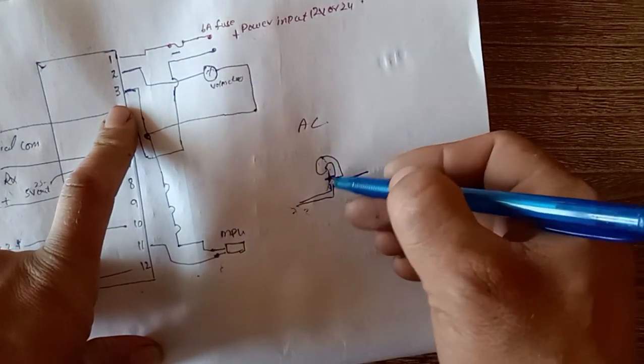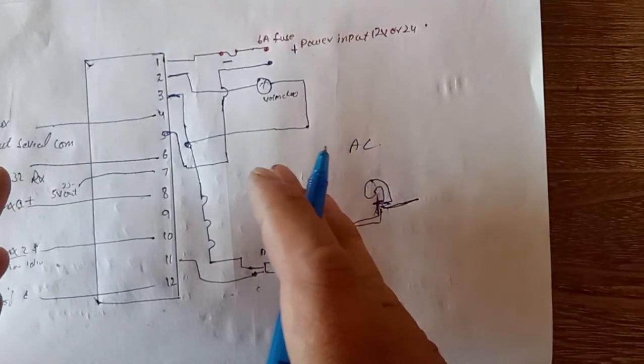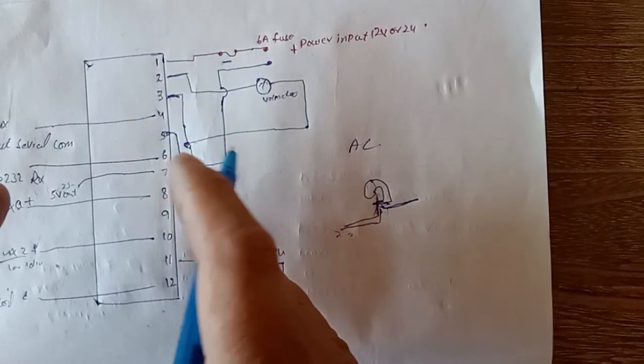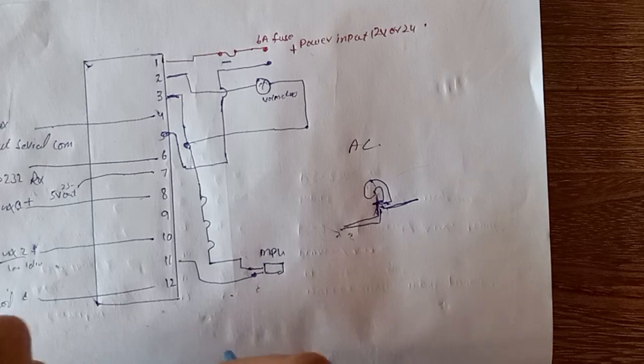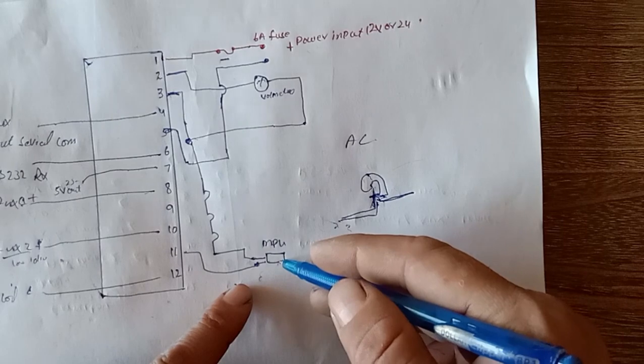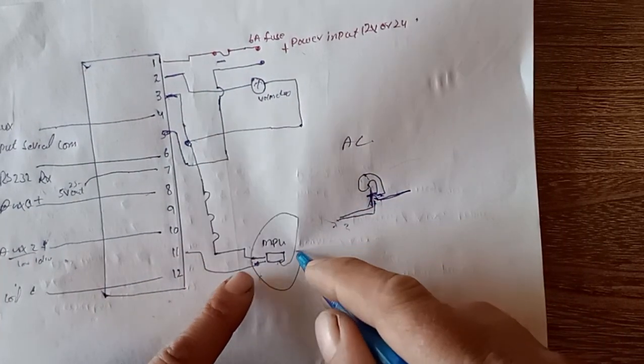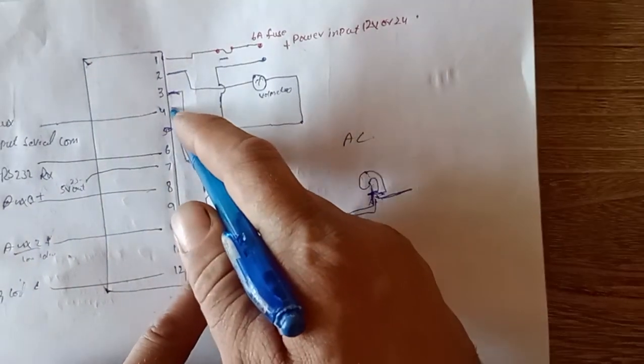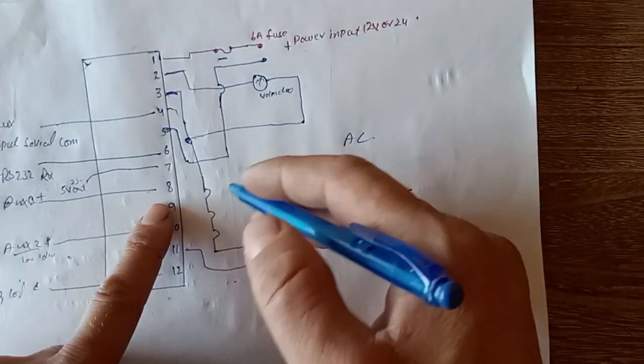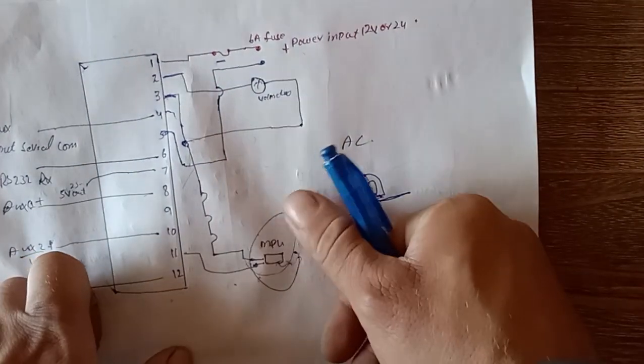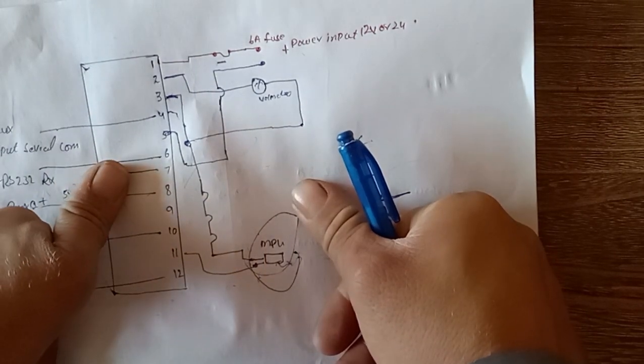When you put the load on the engine, the engine frequency and RPM goes to drop. This actuator accelerates the engine automatically through the MPU sensor. This is working vice versa. When the engine RPM drops, this sends signal to the actuator. The actuator accelerates the throttle to increase the engine speed and power for the load.